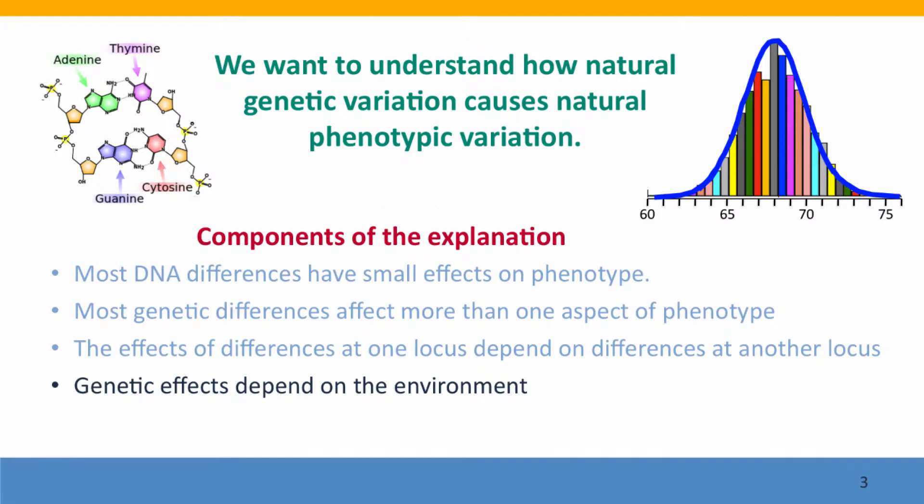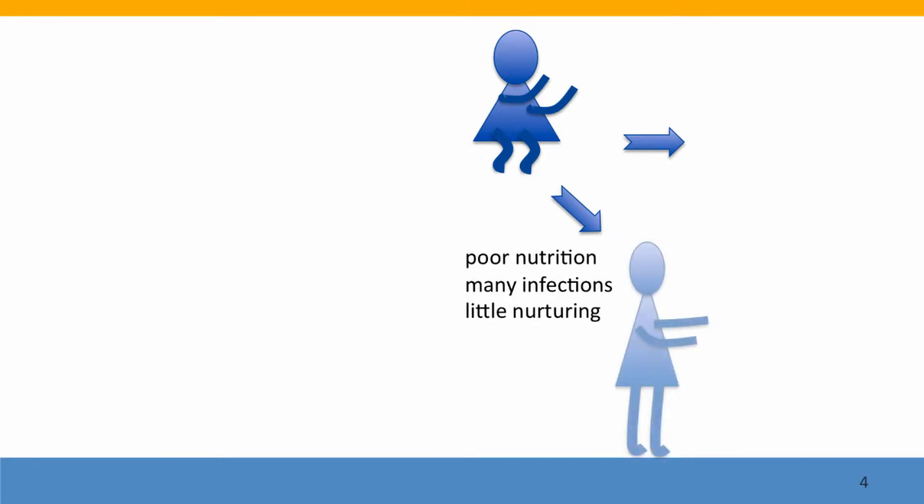We want to understand how genetic variation causes phenotypic variation, or what causes the differences in phenotypes that we see. The new component is the environment. So let's think about height. Here's a baby girl. How tall is she going to be when she grows up? Well, it depends not just on the genes she inherited, but on her environment. If she's in a poor environment with many infections,